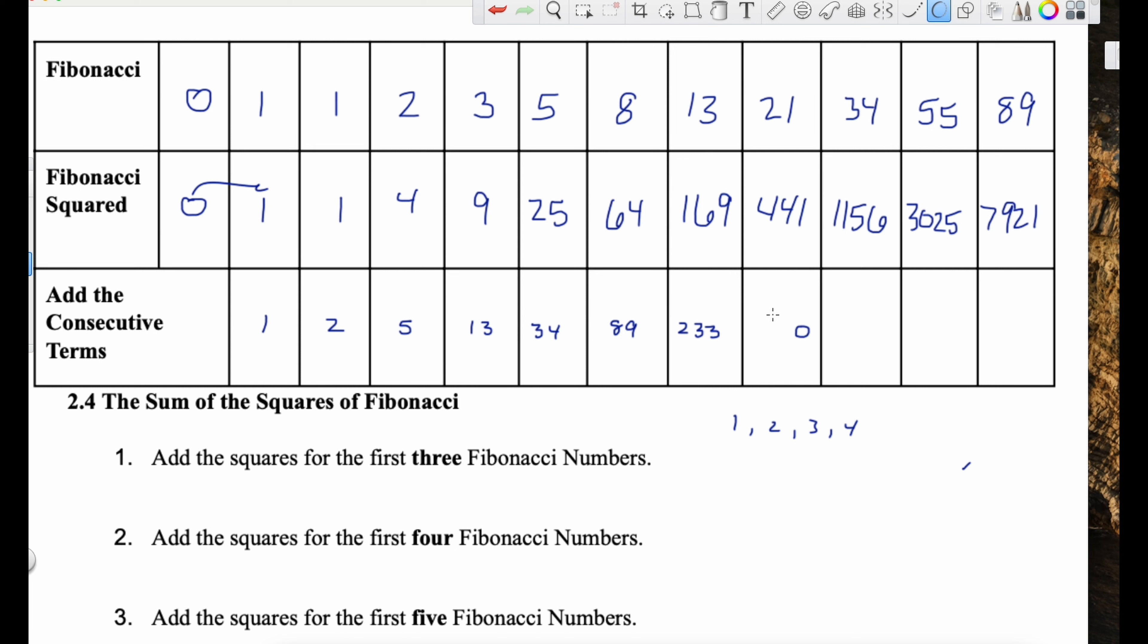And then 89 squared is, let's see, 89 squared, 7921. So I just squared all of those numbers there. Let's zoom in.